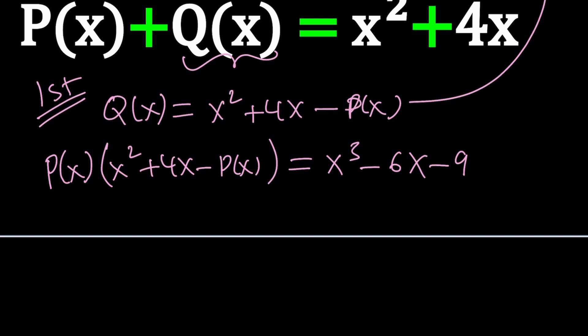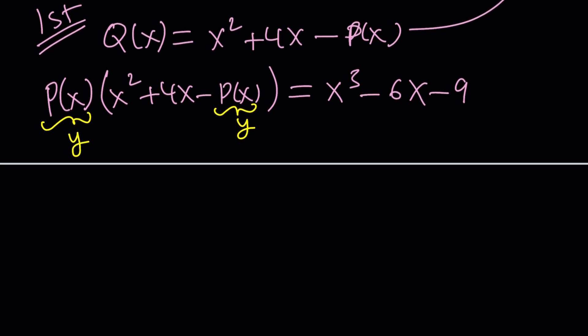Let's call P(x) maybe y. Our goal will be to solve for y. So first I notice x² + 4x is going to be multiplied by y minus y² equals x³ - 6x - 9.